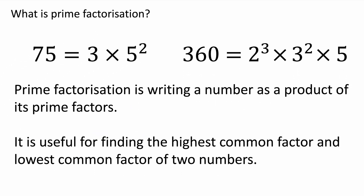So prime factorization is a way of writing numbers as a product of its prime factors — product meaning multiply, so you're multiplying its prime factors. It is useful for finding the highest common factor and lowest common multiple of two numbers. Let's quickly look at how we can use this to find the highest common factor or lowest common multiple.